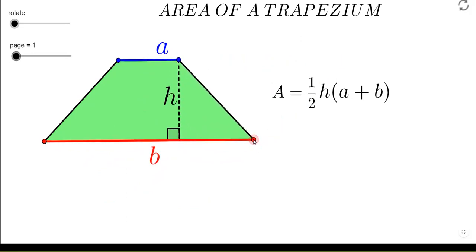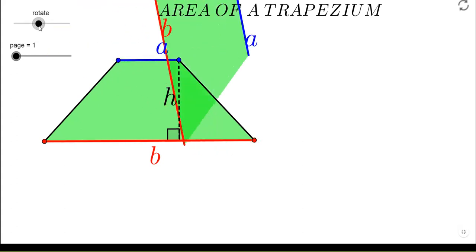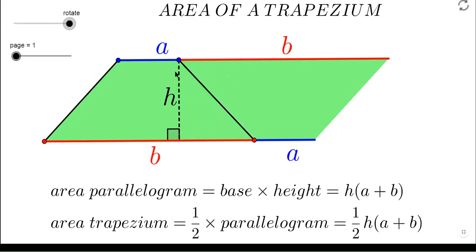We'll be doing that by two methods. The first one, we'll be cutting an exactly same trapezium as this one and rotating it and placing it just adjacent to our previous trapezium.